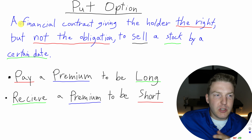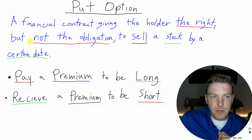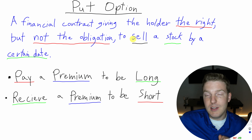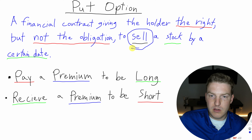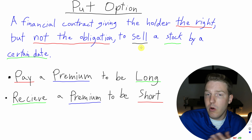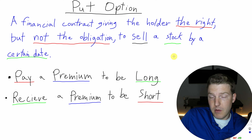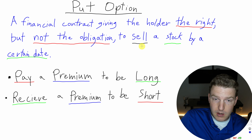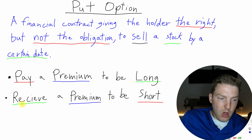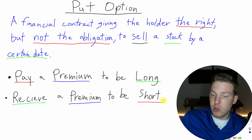Put options are very similar to call options — they're just the opposite. A put option is a financial contract giving the holder the right but not the obligation to sell a stock by a certain date. Every word is the same as the call option definition except 'sell' instead of 'buy.' If I own a call option, I want the price to go up; if I'm long a put option, I want the price of the underlying stock to decline. We can pay a premium to be long or receive a premium to be short the put option.